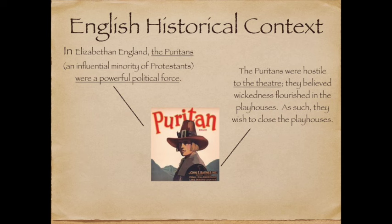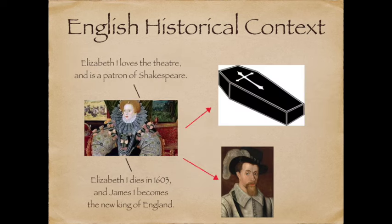Understanding the English historical context — what was happening when Shakespeare was writing Macbeth — is really important for understanding the play. Shakespeare wrote it in Elizabethan England where the Puritans, who were an influential minority of Protestants, were a powerful political force. Importantly, the Puritans were hostile to the theatre; they believed wickedness flourished in the playhouses — prostitutes, beggars, and thieves attended — and they wished to close the playhouses. Elizabeth I loved the theatre and she protected it from the Puritans, and she was a patron of Shakespeare.